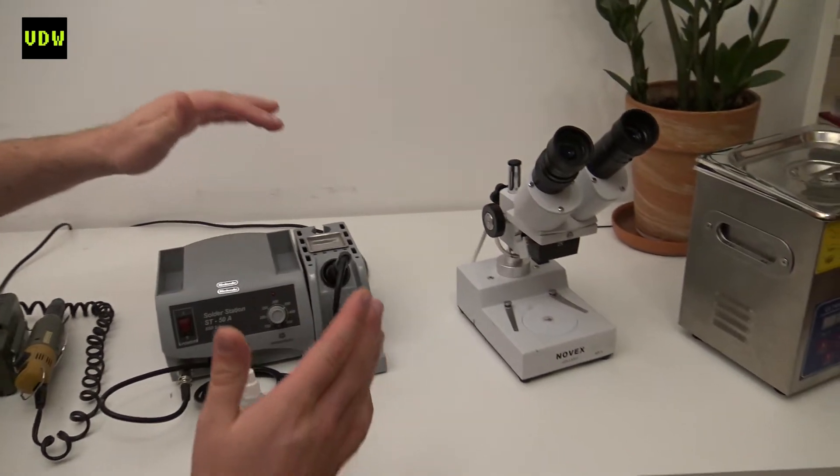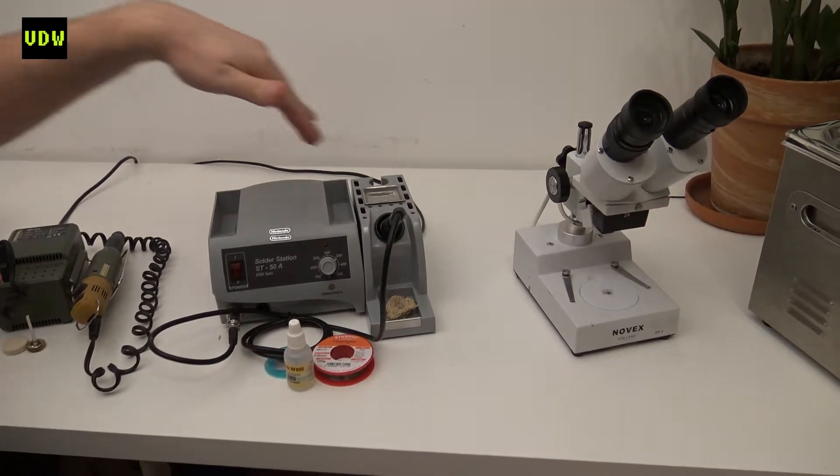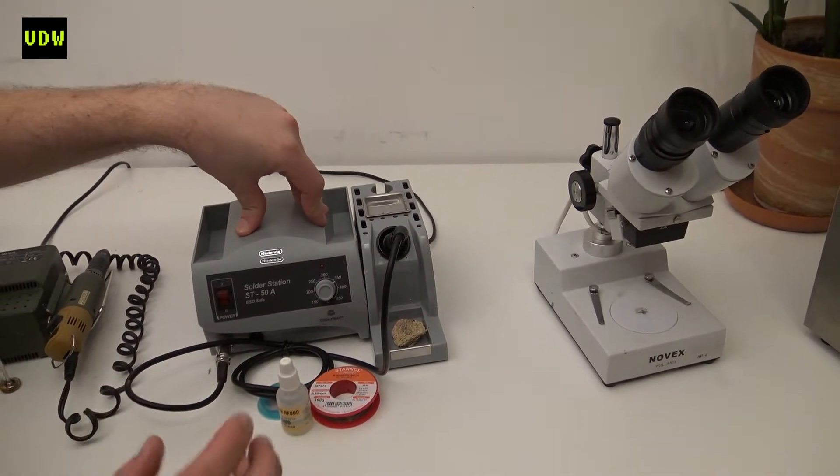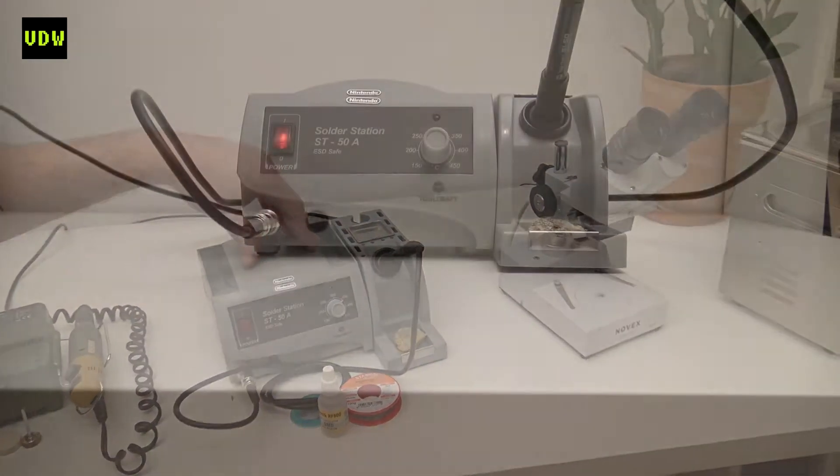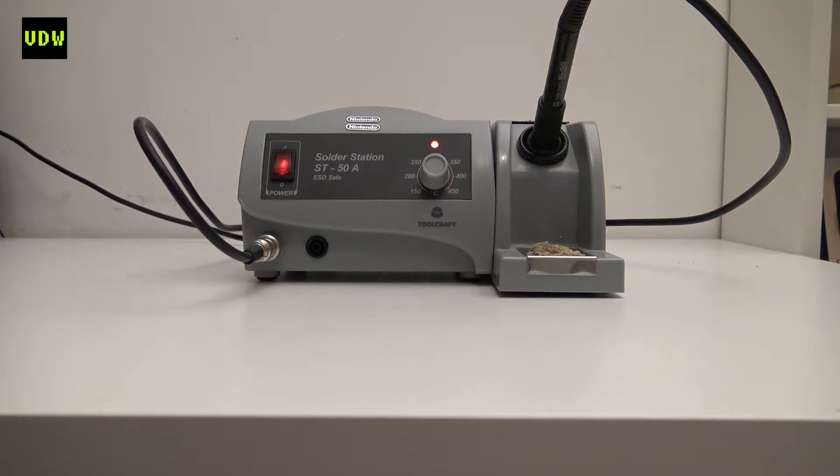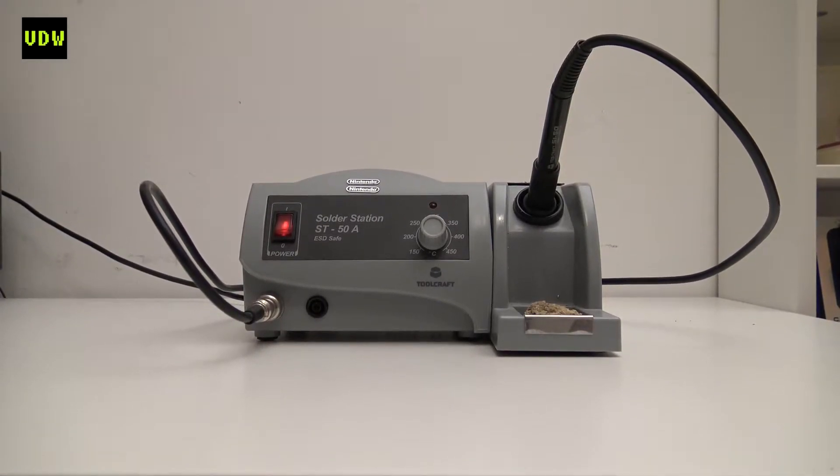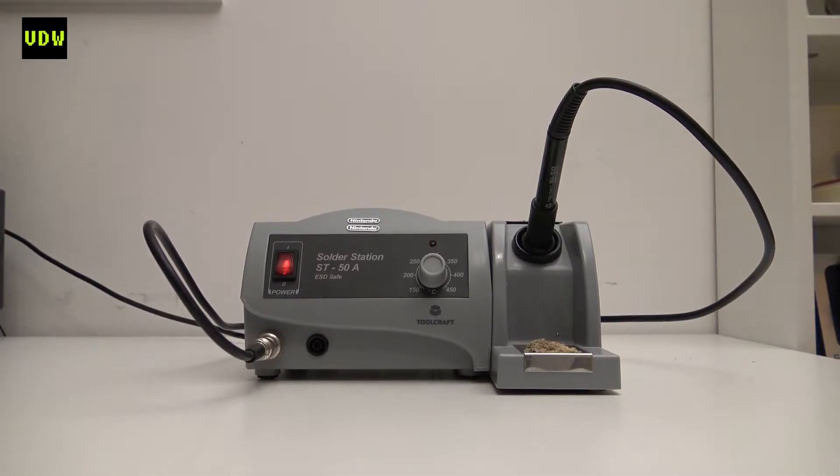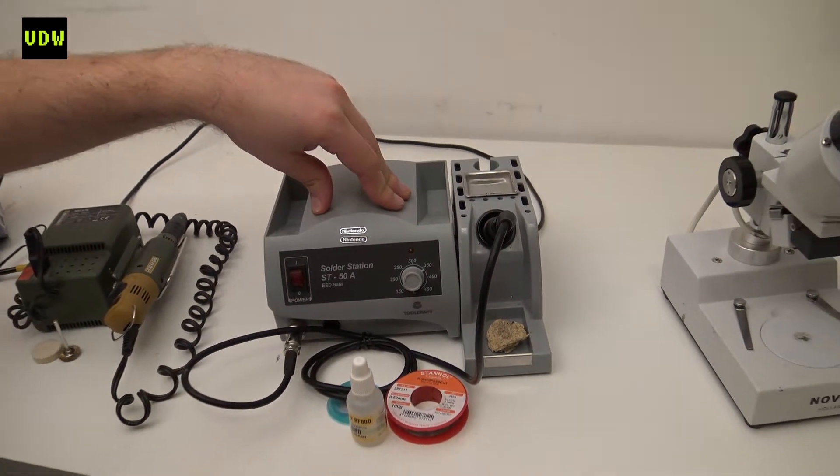The next tool is a soldering station, and from here on we're going to start with the tools that you will find in an electronics lab. The soldering station is important—you will end up having to replace parts on the board, and to be able to take them off or put them back on, you will need a soldering station.